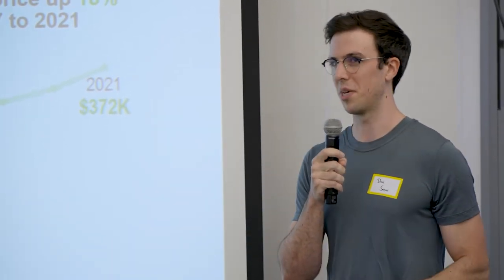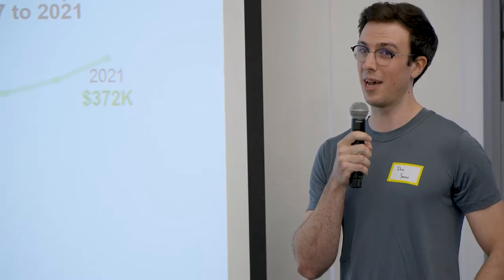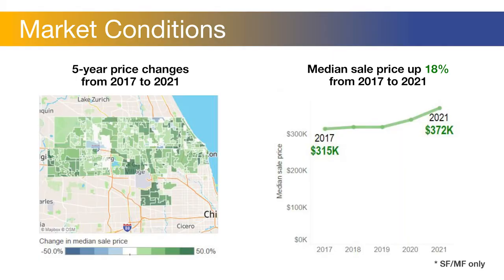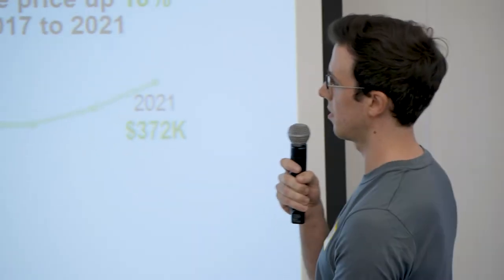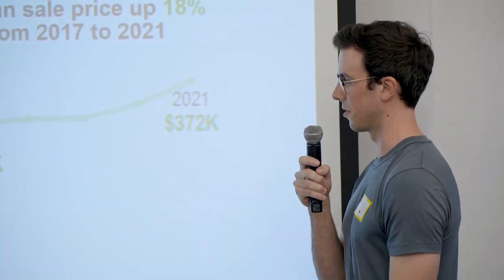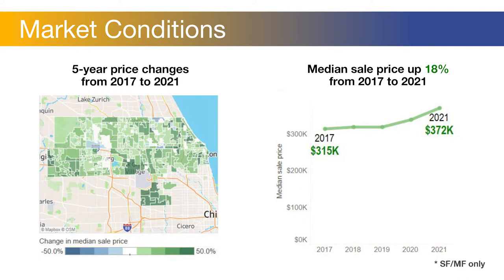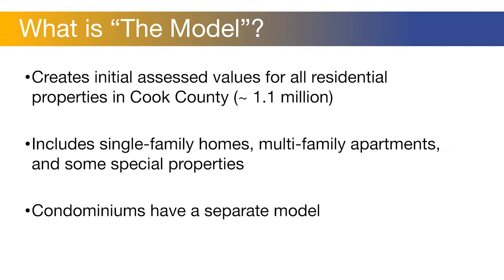If you are a property owner, maybe even if you're not, you may have noticed that the real estate market has been kind of wild lately. It's been since basically the start of COVID going up like 10 to 15% year over year for single family, and that makes our job very difficult. Median value has jumped 18% for only the north suburbs since 2017. This is the same price change but just mapped out, and you can see pretty much everything is green, meaning that almost the entire northern part of Cook has grown in value. So our job is to reflect that — we know that the market is growing and assessments have to grow as well.